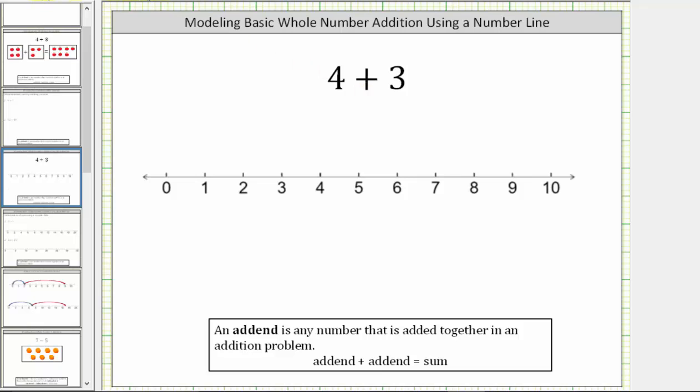To model the sum, we first model four on the number line by starting at zero and moving right four units. Starting at zero, we have one, two, three, four.